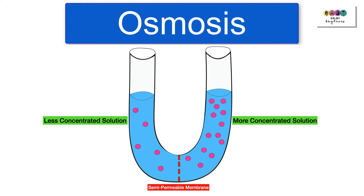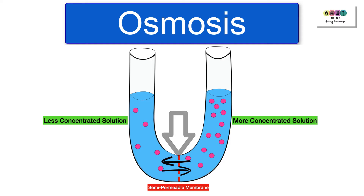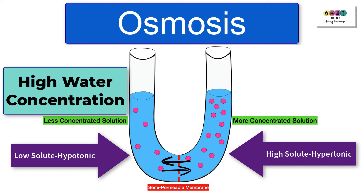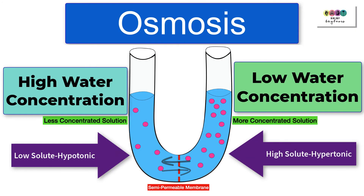Here we have a glass vessel with the left side separated from the right by a semi-permeable membrane. Only water molecules can pass freely through the membrane — the solute particles in pink are too big to pass through. On the left, the solution has fewer pink solute molecules, so it has high water concentration and low solute — it's hypotonic. On the right, there are far more solute molecules, so it has low water concentration and high solute — it's hypertonic.